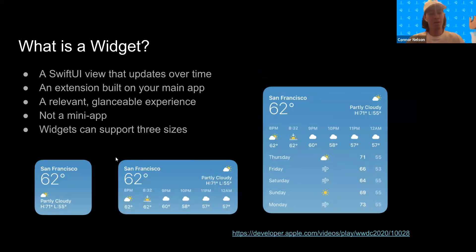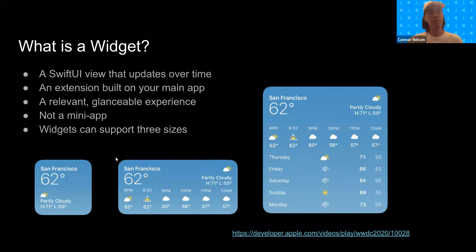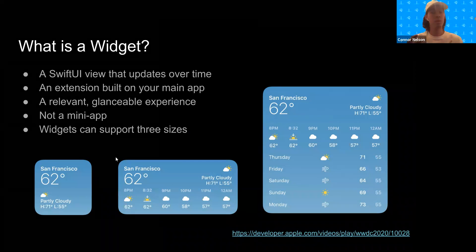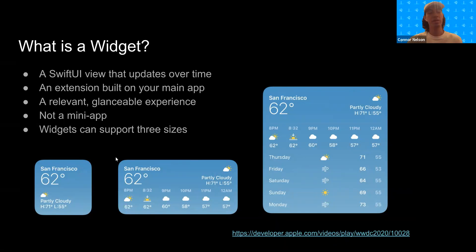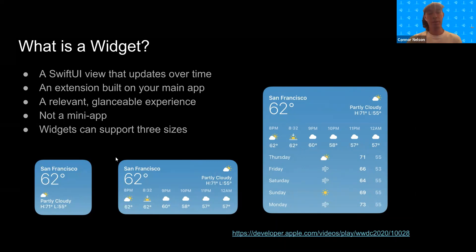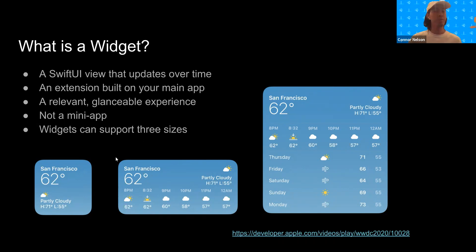So what is a widget? A widget is a SwiftUI view that updates over time. This is SwiftUI only — no UIKit. Widgets are built as extensions from your main app, and they should present relevant, glanceable information from your main app. Widgets — this is very important — widgets are not mini apps, so that means you can't have things like animations or scrolling. You should think of widgets more as a projection of content from your main app.